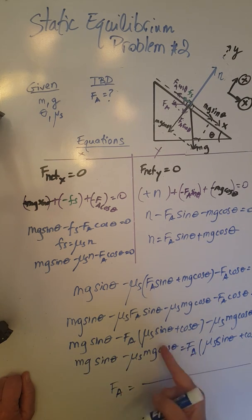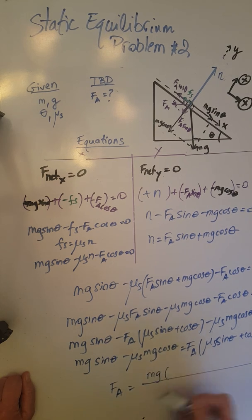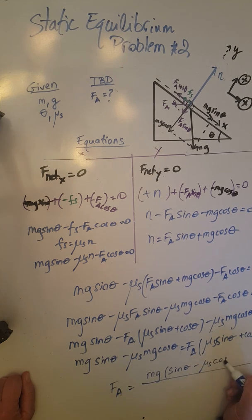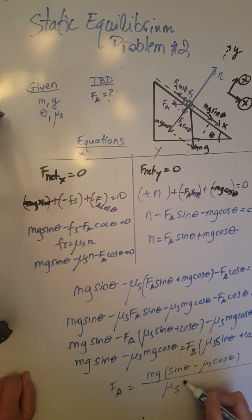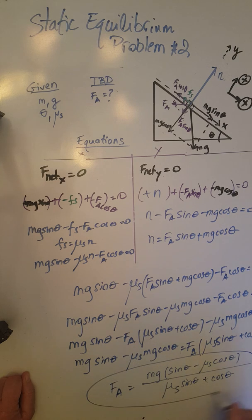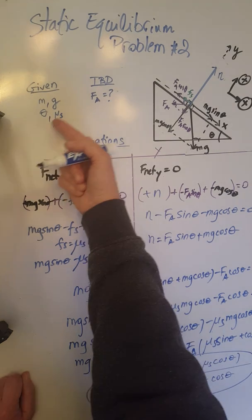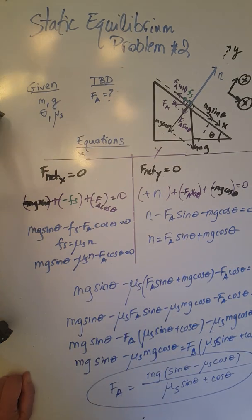Solving for F_a by dividing both sides: F_a equals mg(sine theta minus mu_s cosine theta) divided by (mu_s sine theta plus cosine theta). That is our final answer expressed in terms of the givens mg, theta, and mu_s. Thank you.